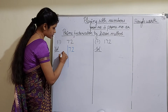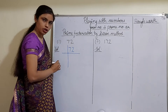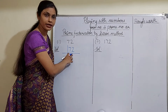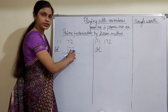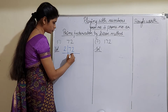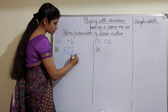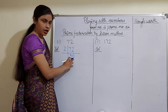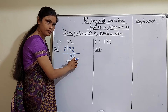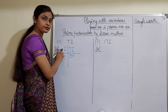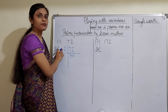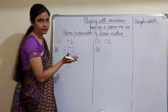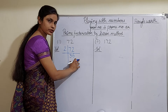The first smallest prime factor is 2. Let us divide this number by 2. It is exactly divisible by 2 because the unit digit is 2. So we get 36. You will write the quotient here and the divisor here. The divisor will always be a prime number — only then it will be a prime factor.